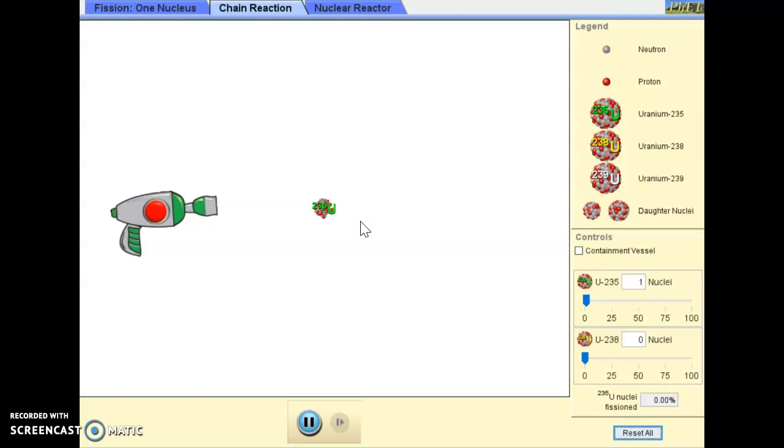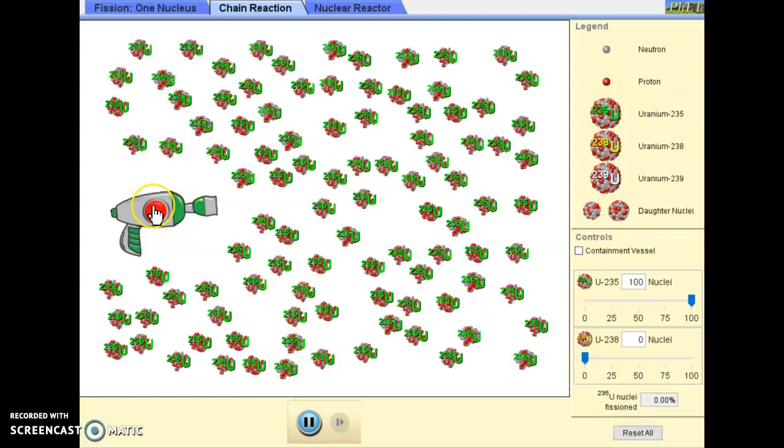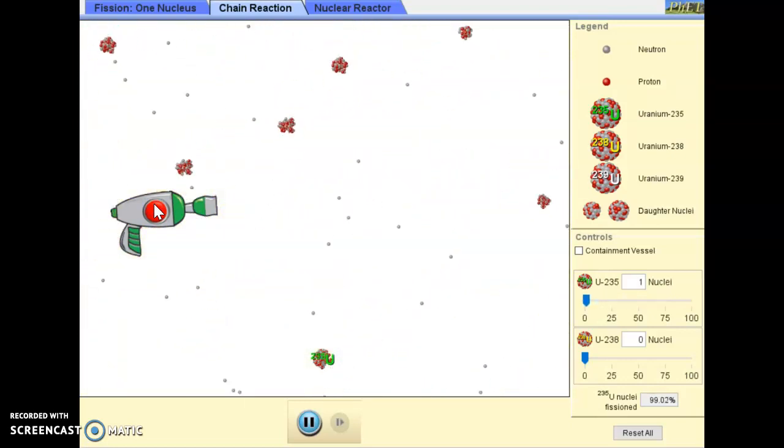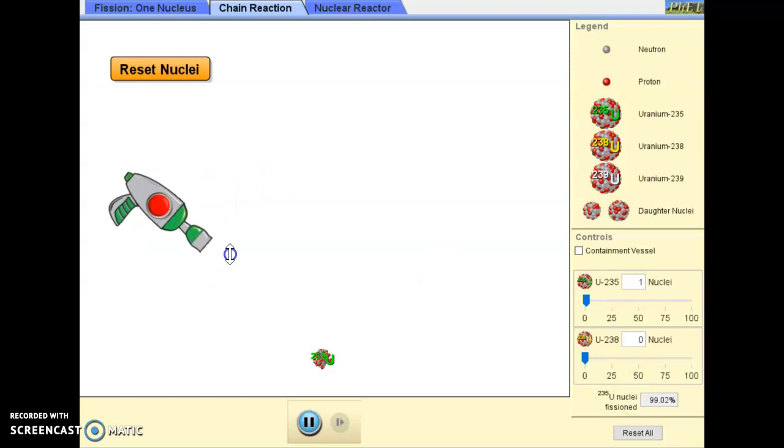Now scrolling down to number 11, we're trying to see how having a different ratio of 235 to 238 will affect the results. So with 100, 235, and 0, 238, that's the first column. I shoot. And boom. 99.02% fission the first time. Okay, I think I got it this time. Boom. All right, it took me two shots to get all of them. Sometimes it'll be one shot, sometimes it'll be two shots.